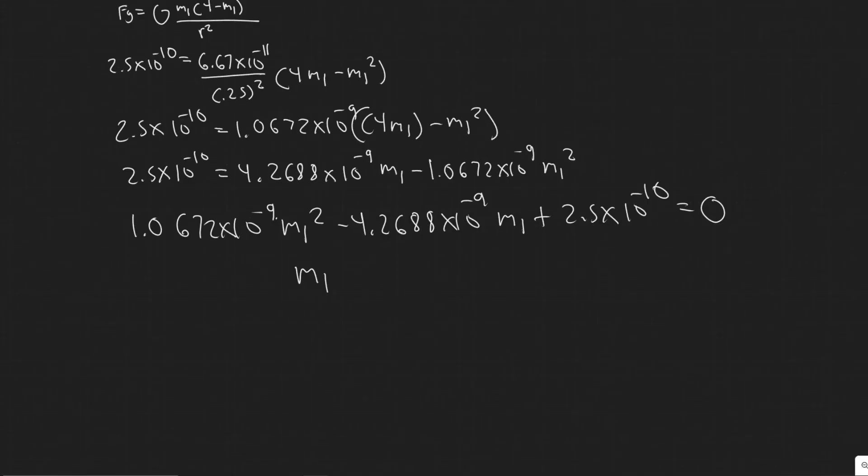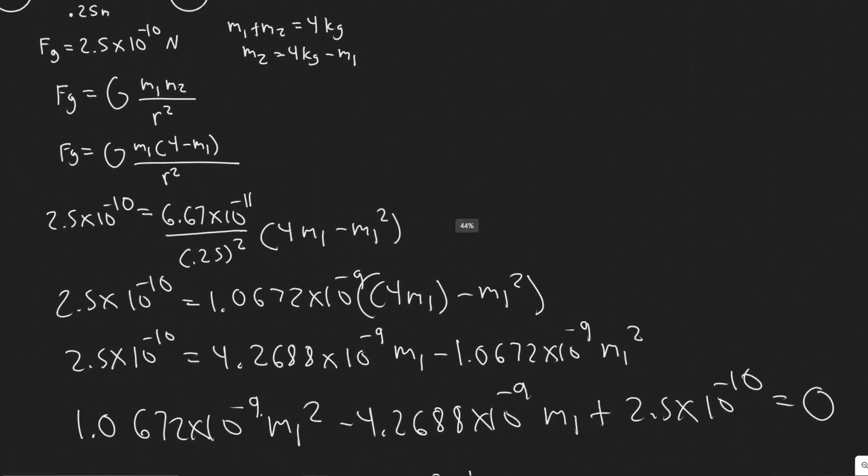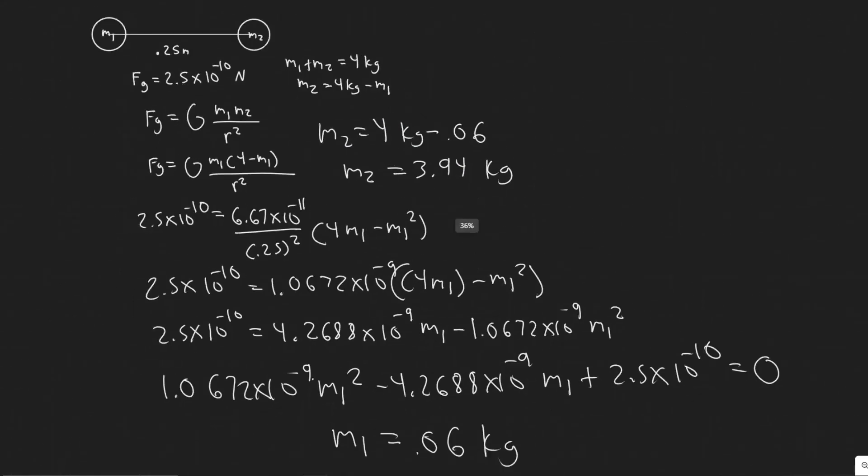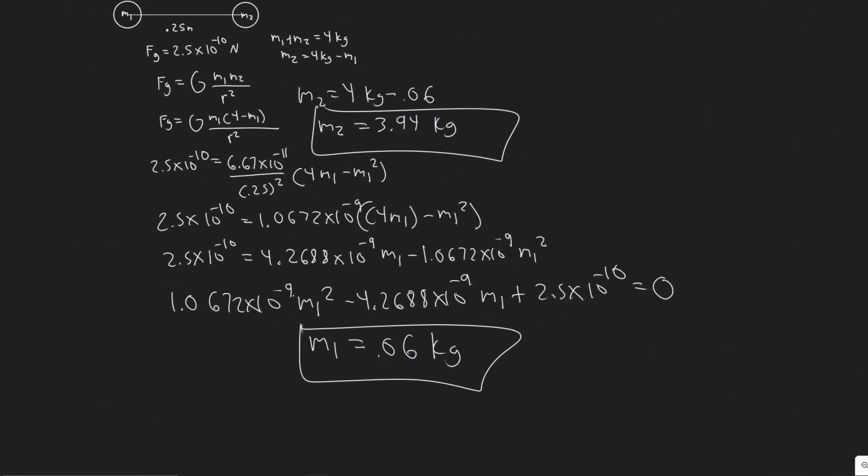And so what you're going to find is when you do this, m1 is going to be equal to 0.06 kg, that's m1. And then if we want to find m2, it's 4 kg minus 0.06 and you get 3.94 kg. So two different values. Keep in mind, these are just made up masses. So one's going to have 3.94, one's going to have 0.06. But these are essentially the masses of your two objects here. So 3.94 and 0.06. So these are going to be your answers and hopefully you found this video useful.